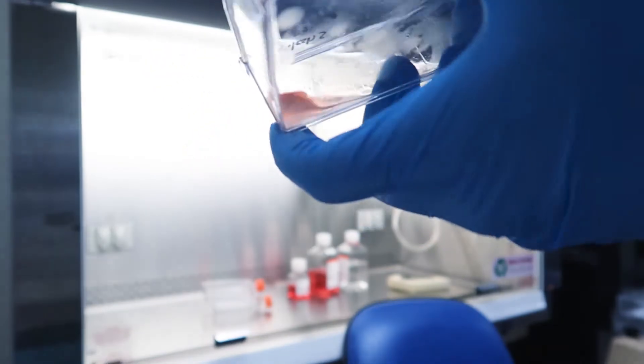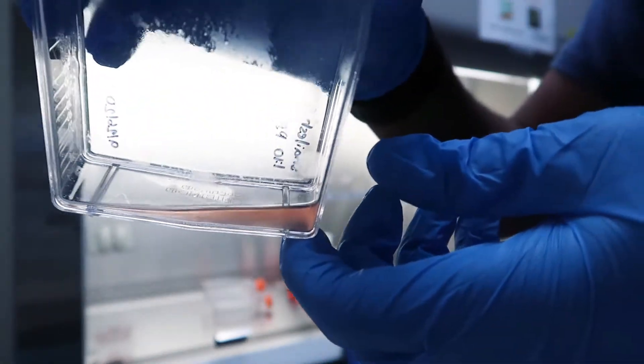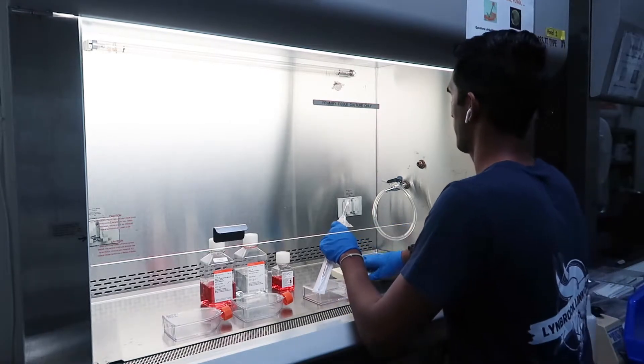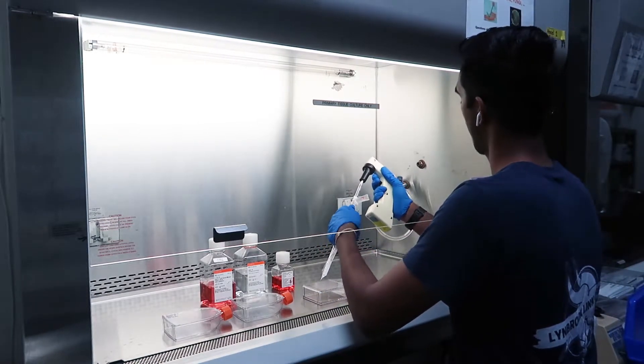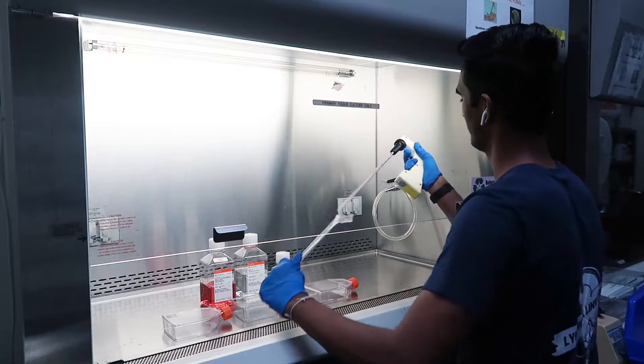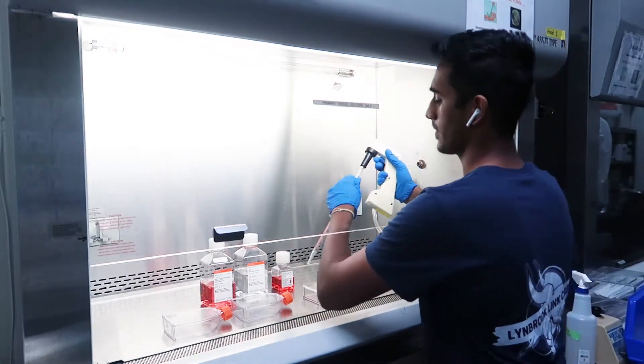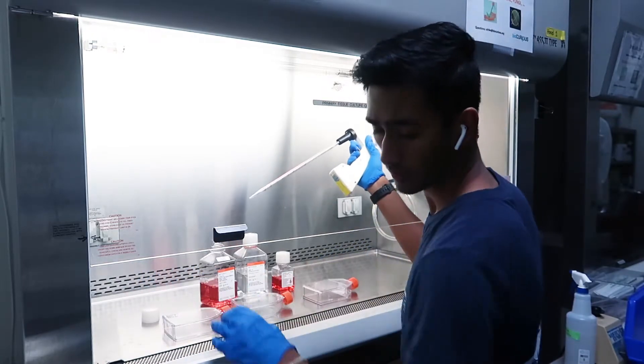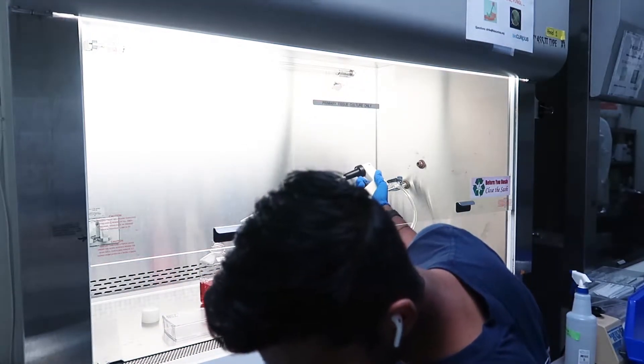When you remove your flask from the incubator, you should check by tilting the flask to see if the cell monolayer slides down. The next step in this process is collecting the cells. We're going to add seven milliliters of the medium to the flask with trypsin EDTA.